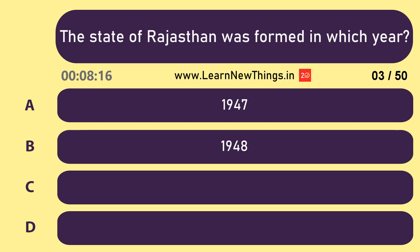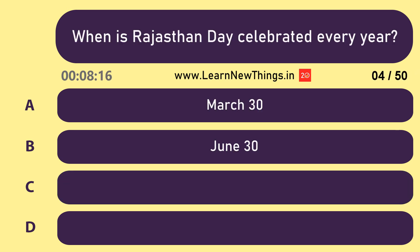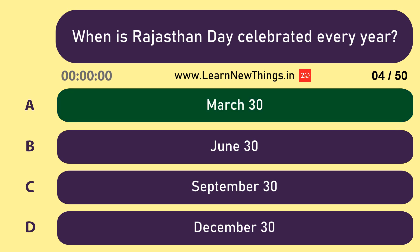The state of Rajasthan was formed in which year? 1949. When is Rajasthan Day celebrated every year? March 30.